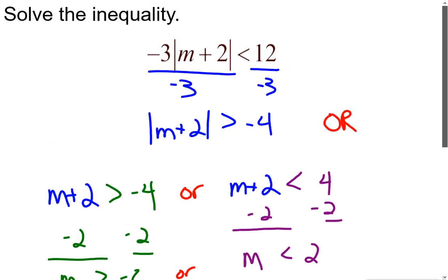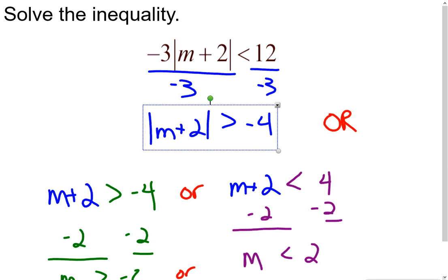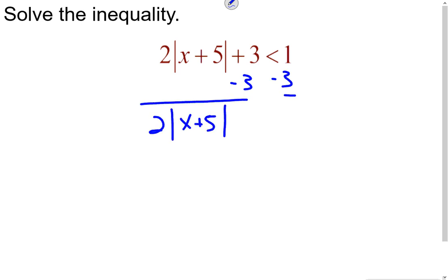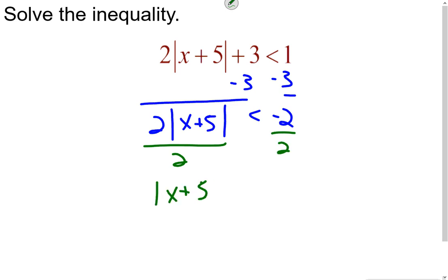So we started with that inequality, isolated the absolute value symbol, went through and solved it, and ended up with all real numbers. Now let's look at this next example. First, we have to isolate the absolute value. Subtracting 3 from both sides gives us 2 times the absolute value of x plus 5 is less than negative 2. Then dividing both sides by 2, we get the absolute value of x plus 5 is less than negative 1.